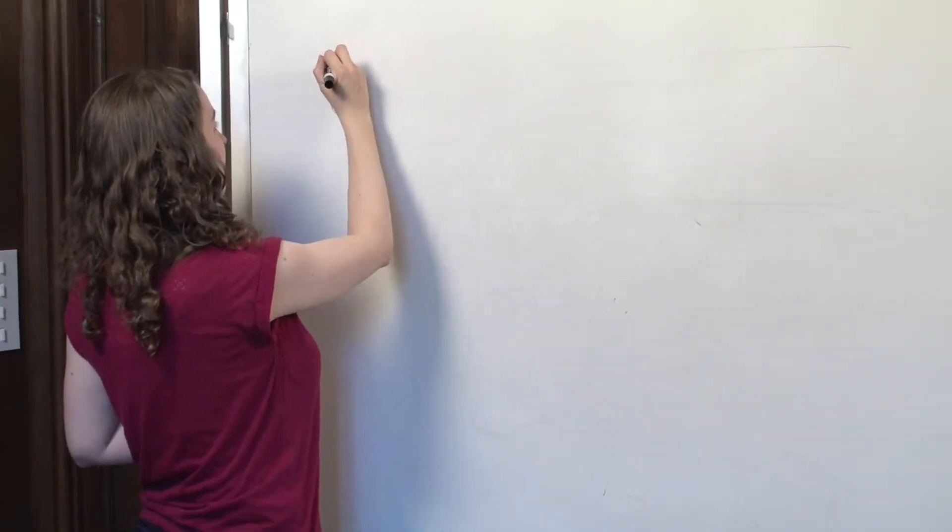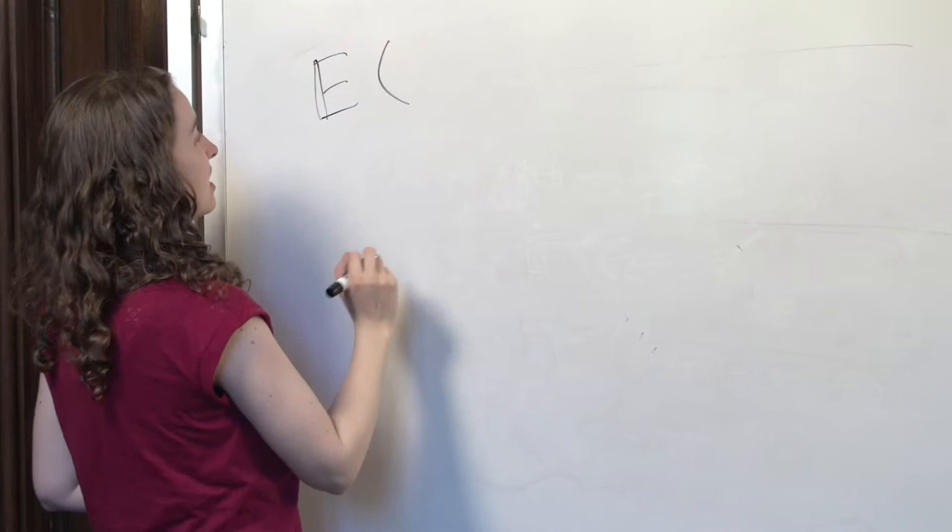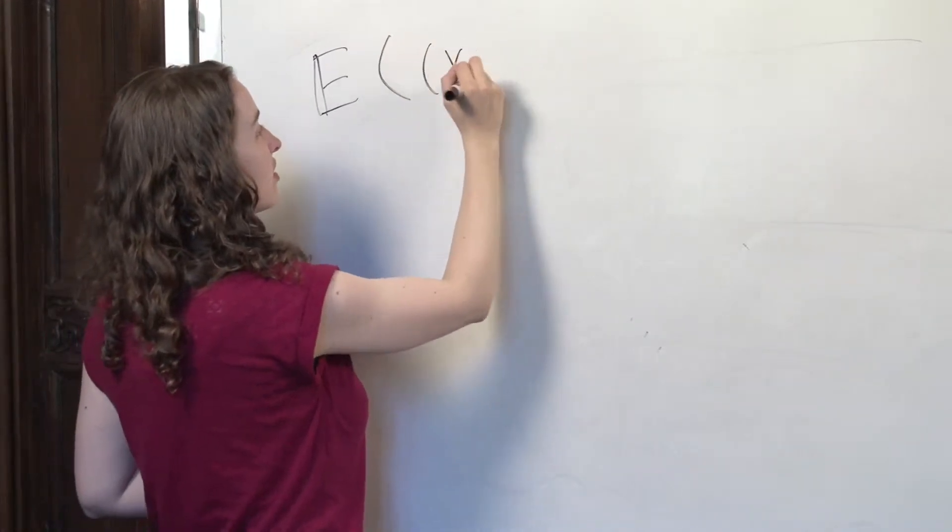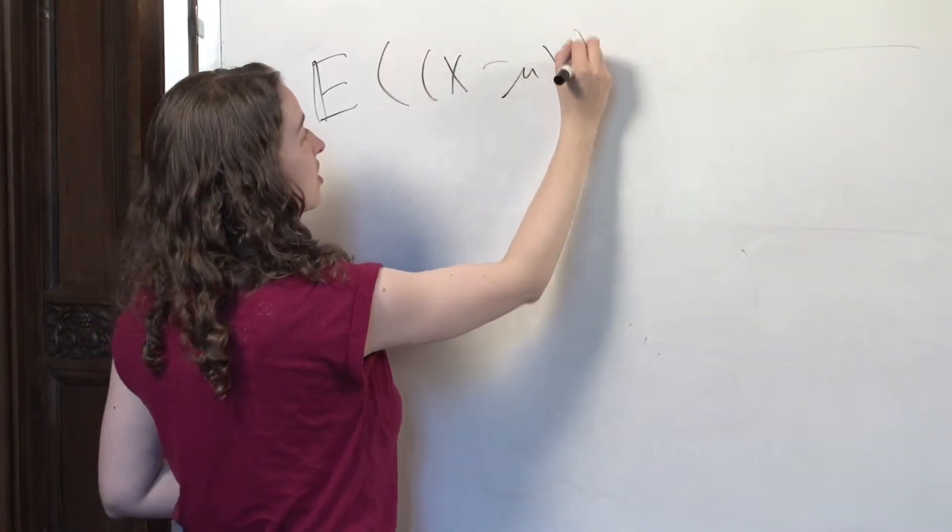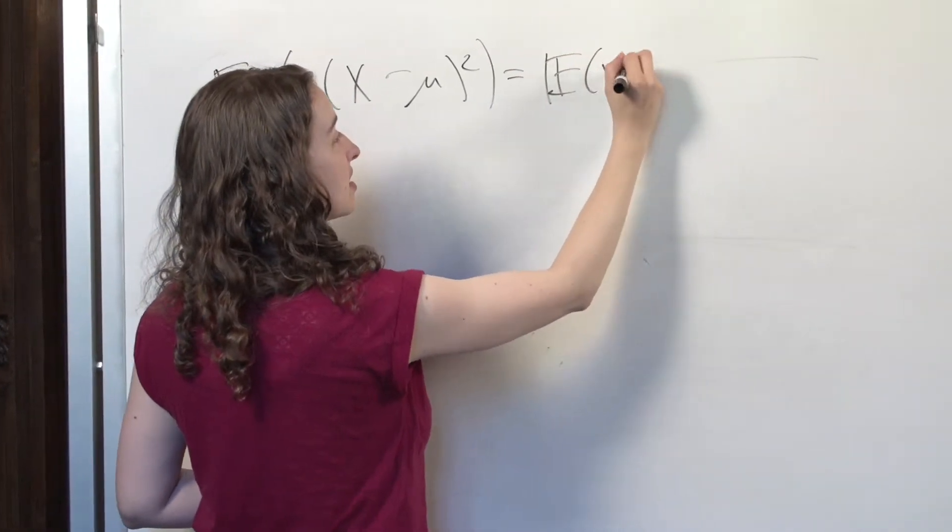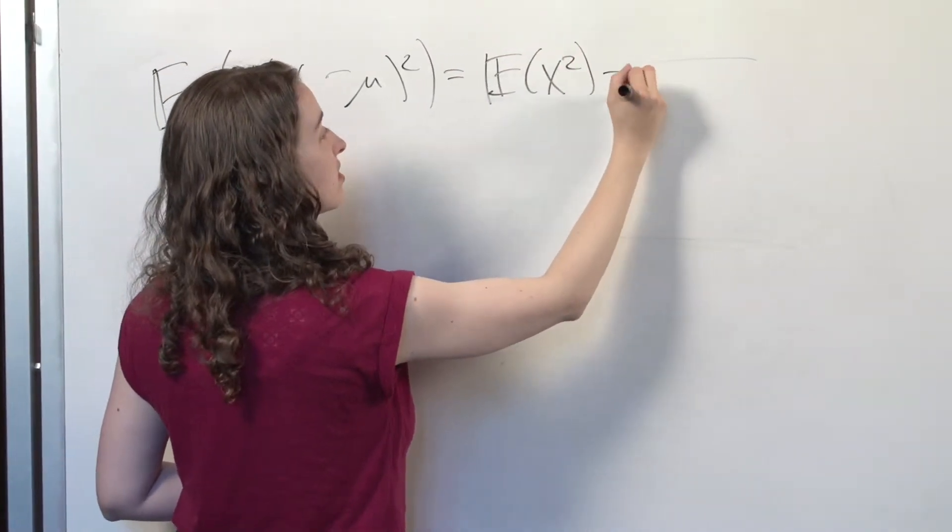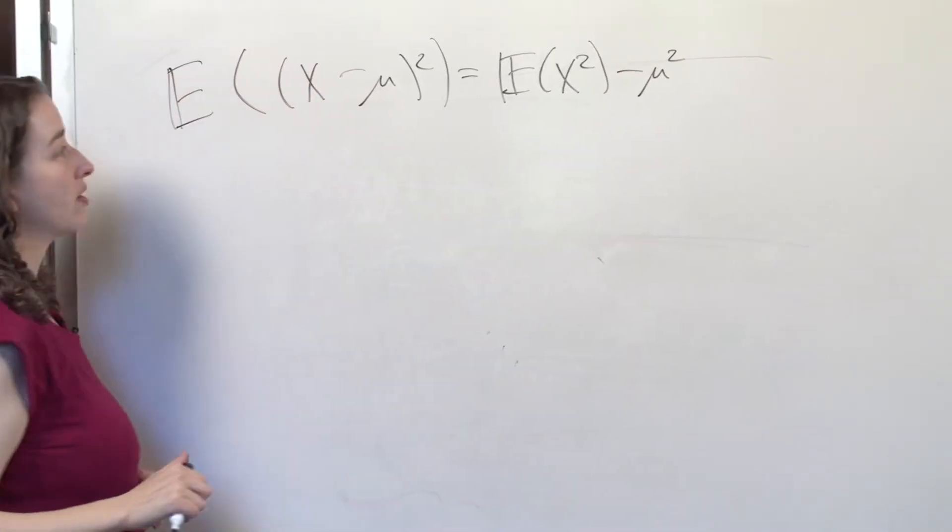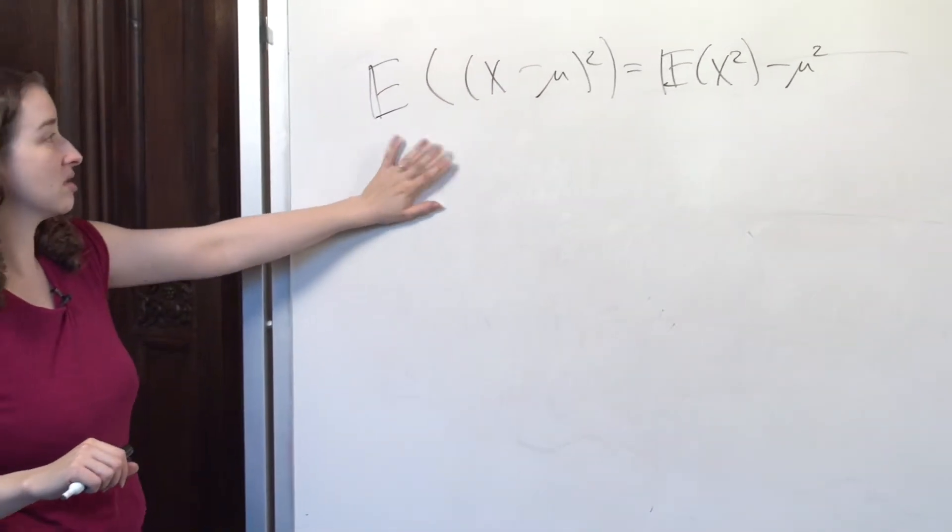So let's see what we've done so far. We remember that the variance of x is, by definition, the expected value of x minus mu squared. And we've shown that we can express that quantity as the expected value of x squared minus mu squared.